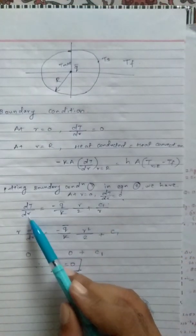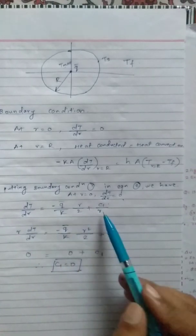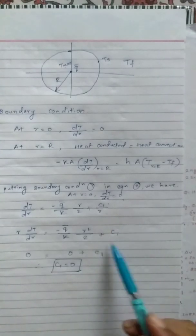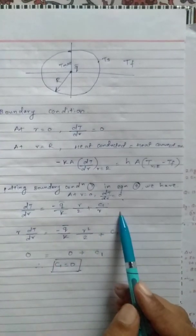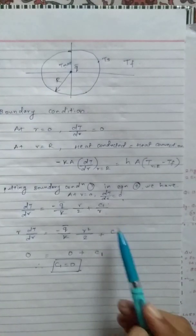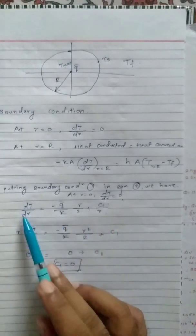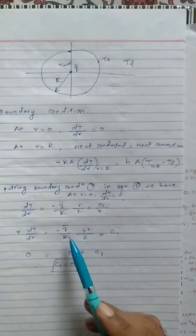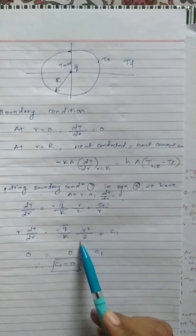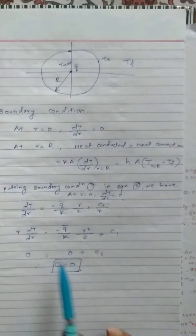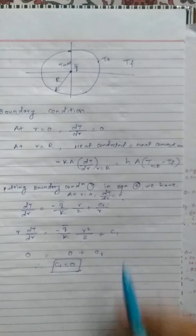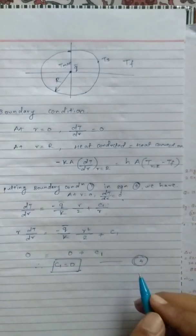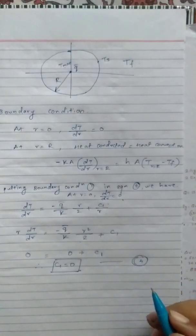To be clear: do not substitute r = 0 into the divided form (dt/dr = −(q̄/k)(r/2) + C₁/r), as that gives C₁/0. Instead use the earlier form r dt/dr = −(q̄/k)(r²/2) + C₁, which gives C₁ = 0. This is equation number 4.